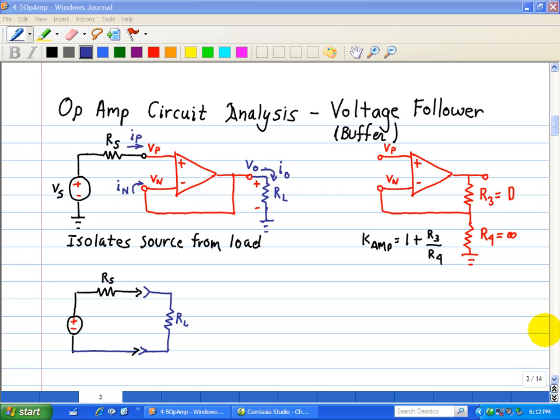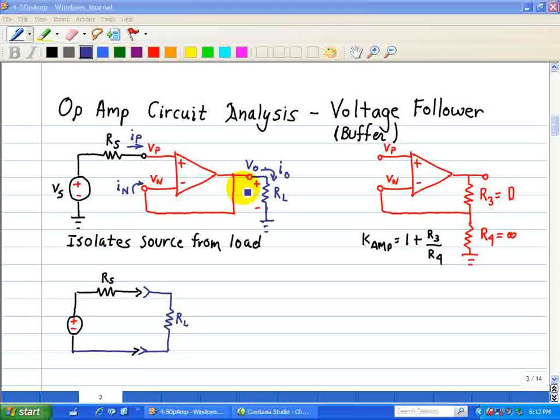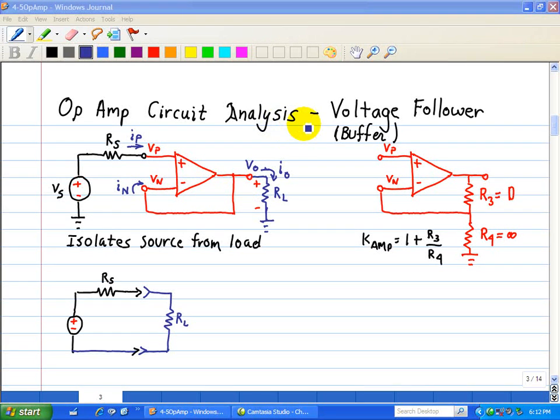First we have this circuit with VP and VN, and we have a source connected through the op-amp and then to the load. What this voltage follower does is it isolates the source from the load.